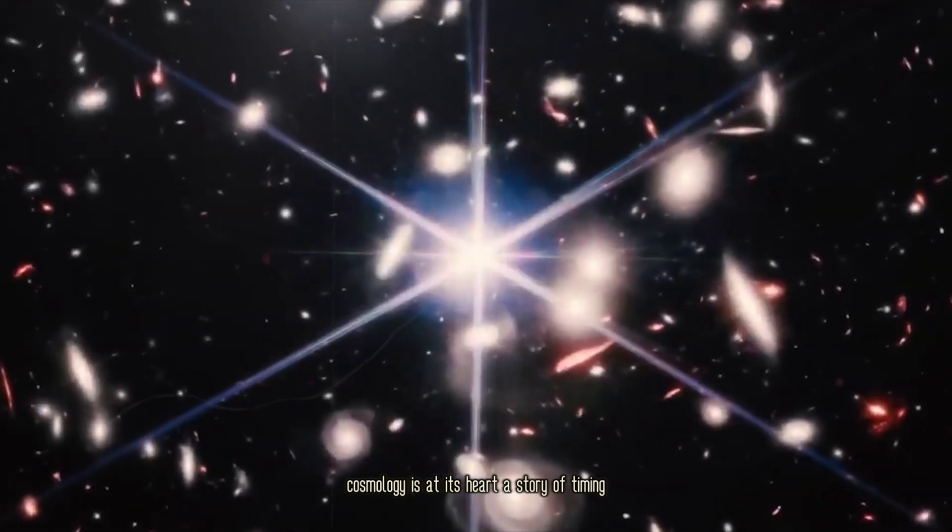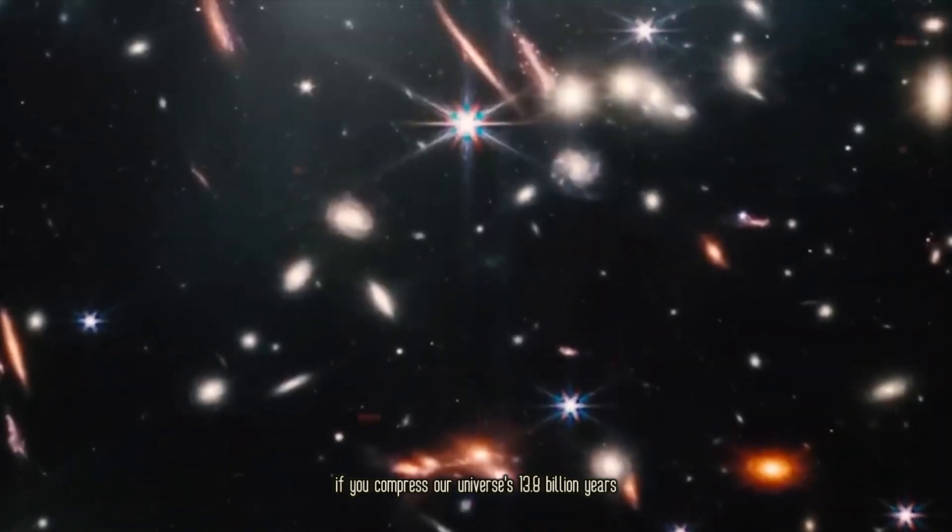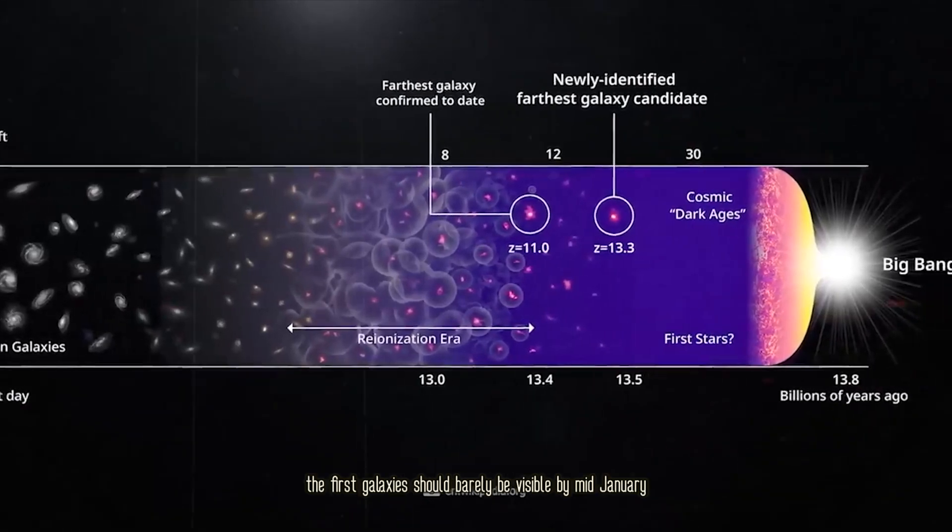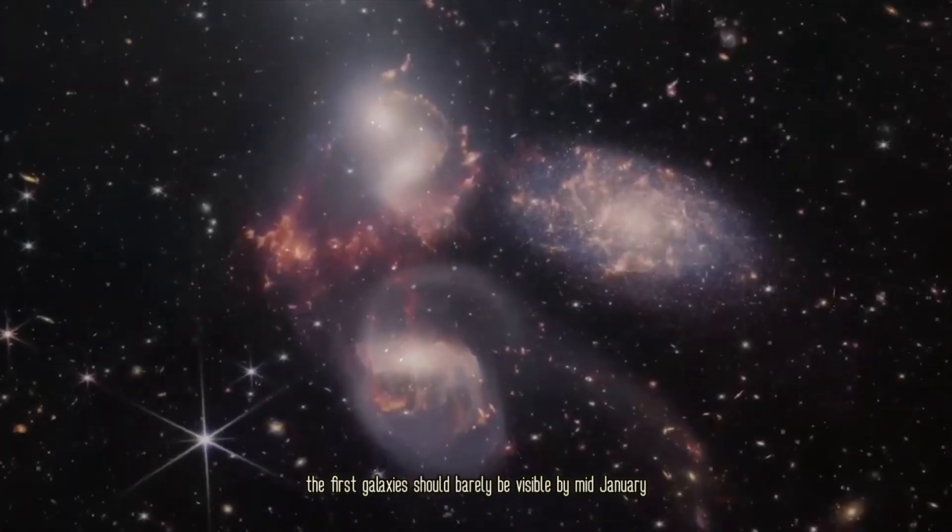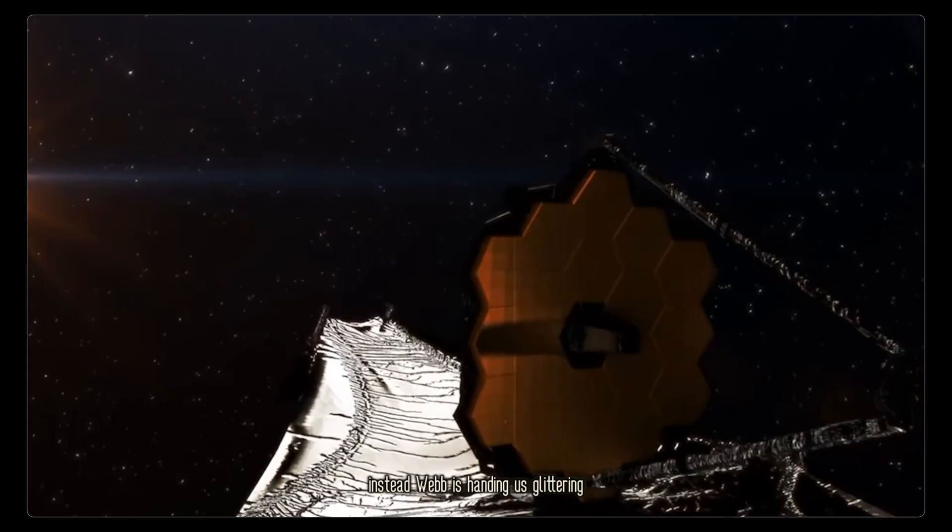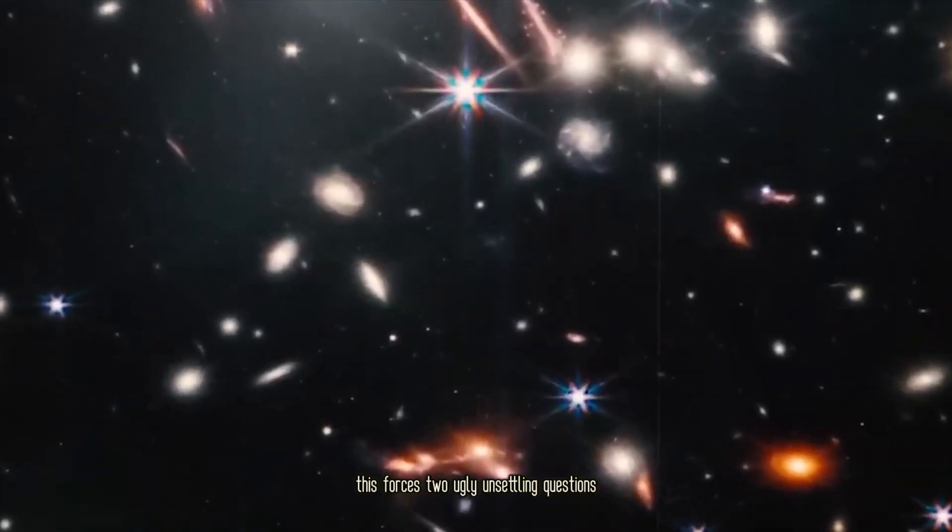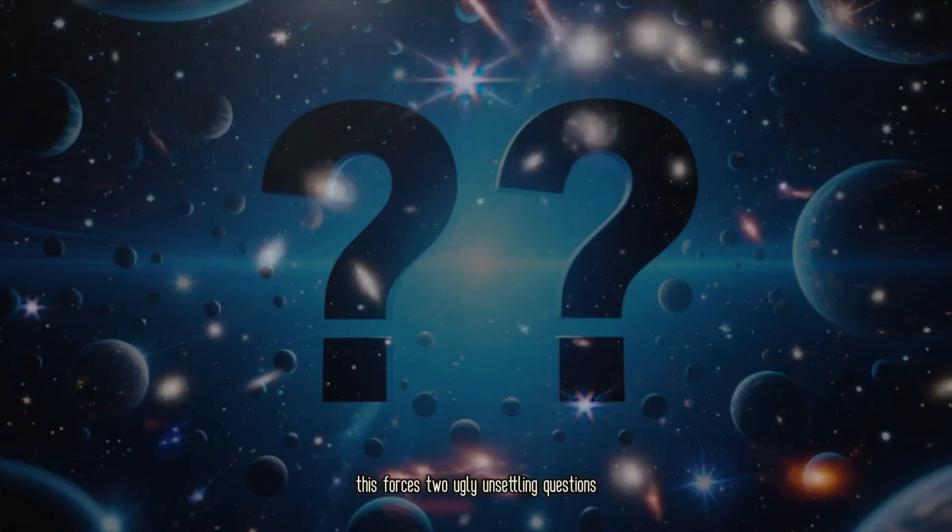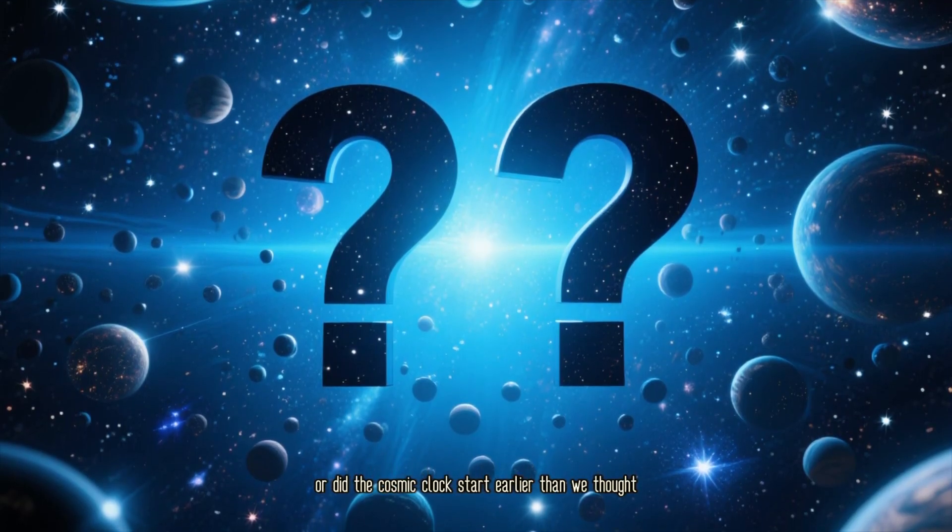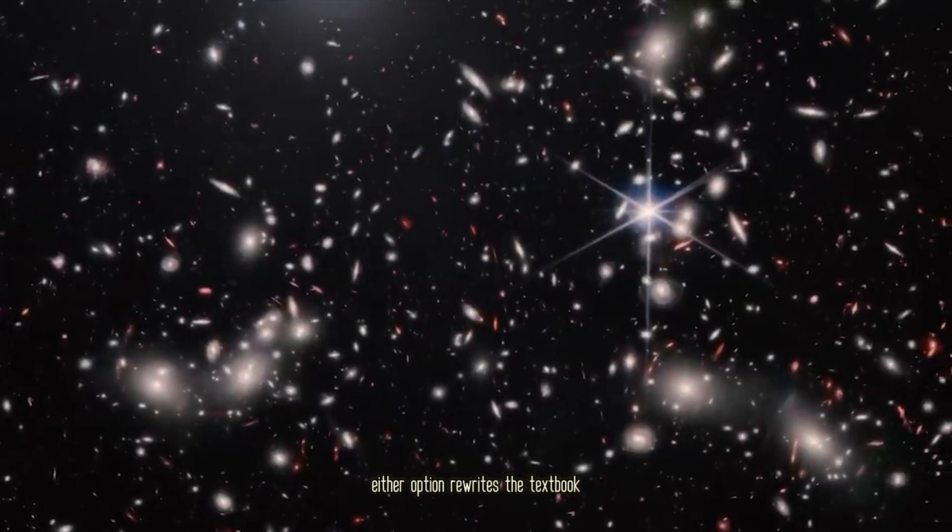Cosmology is, at its heart, a story of timing. If you compress our universe's 13.8 billion years into a single calendar year, the first galaxies should barely be visible by mid-January. Instead, Webb is handing us glittering galactic metropolises before New Year's brunch. This forces two ugly, unsettling questions. Did structure formation cheat the speed limit? Or did the cosmic clock start earlier than we thought? Either option rewrites the textbook.